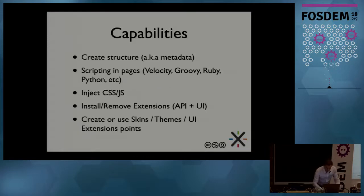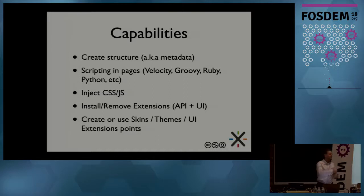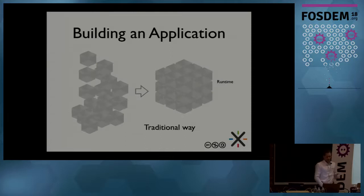What I've demonstrated here was the ability to create structure in wiki pages. But we can do a lot more. You can have scripting in wiki pages to do any actions you want based on the data — query the data you've created, send an email, or do whatever you want. You can inject CSS and JavaScript. You can install or remove existing extensions, which can bring new APIs or new UI. And you can modify the themes and various parts of the UI as you wish.